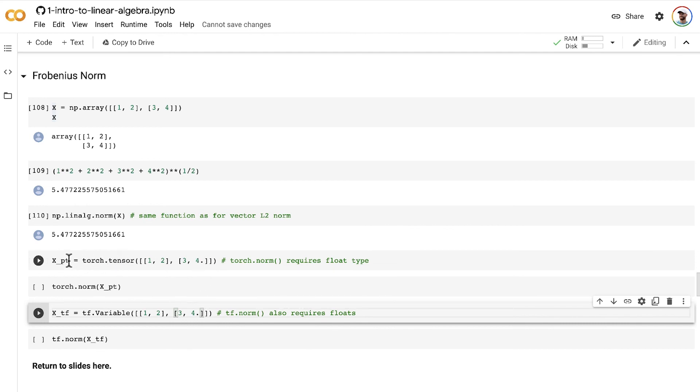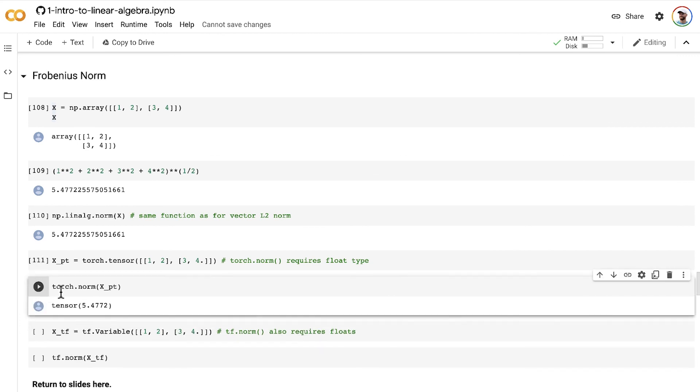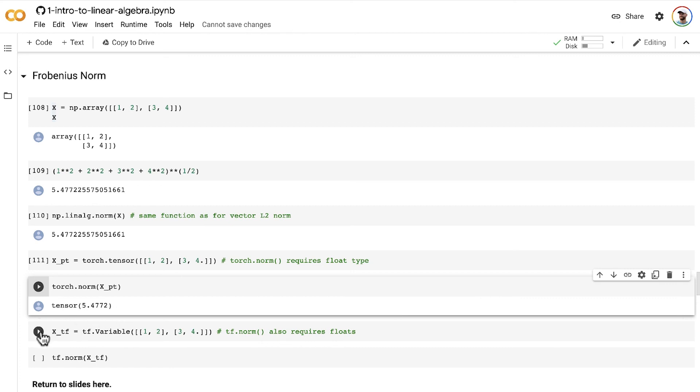So using the Torch tensor method to create the same tensor as we had here in NumPy, and then we can use the Torch norm method to get again the same result, 5.5, and same thing in TensorFlow.